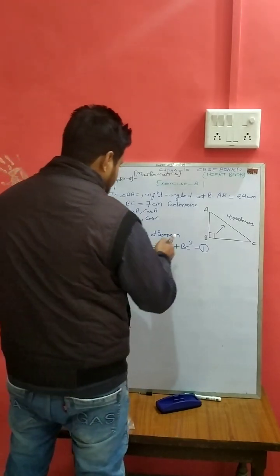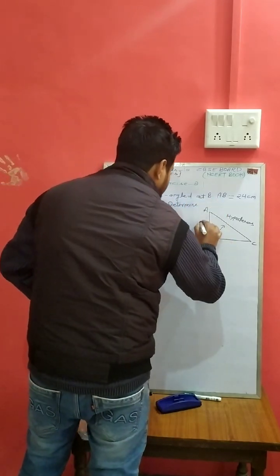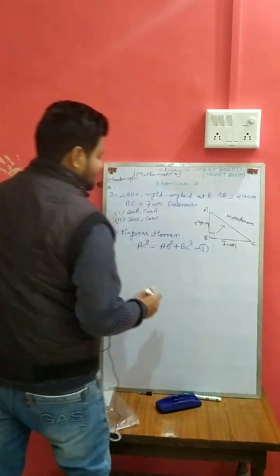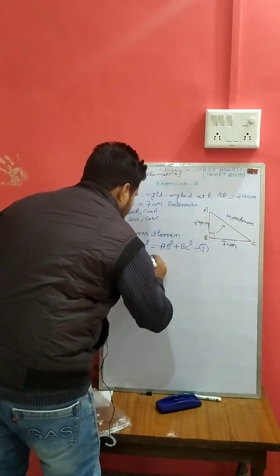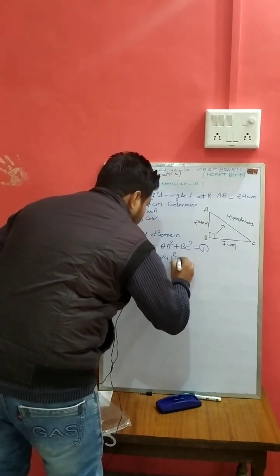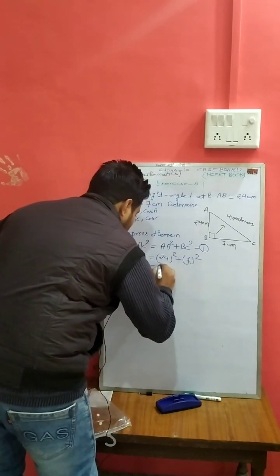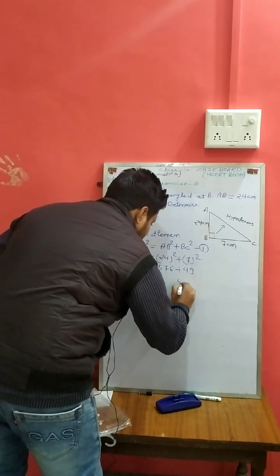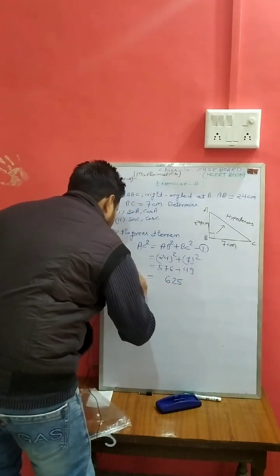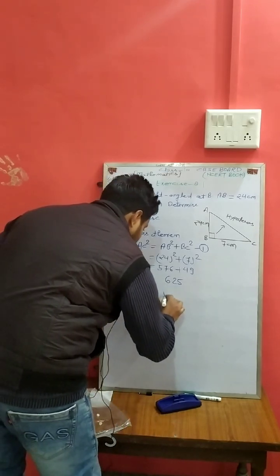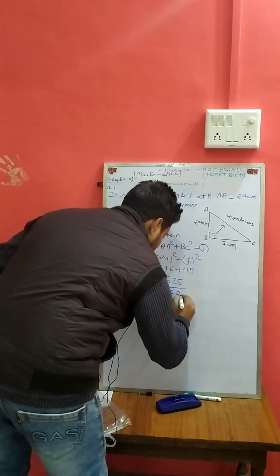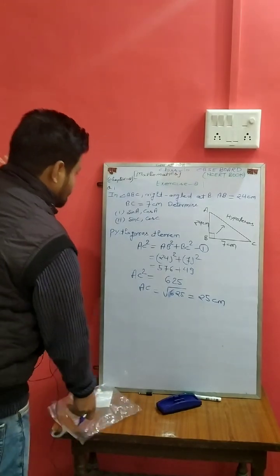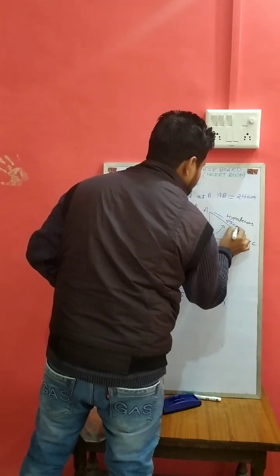First, the hypotenuse. In the triangle, AB equals 24 cm and BC equals 7 cm. To find AC, use this theorem. Put the value: AC square equals AB square, 24 square equals 576, plus BC square, 7 square equals 49. 576 plus 49 equals 625. AC square equals 625. AC equals square root of 625, which is 25 cm.